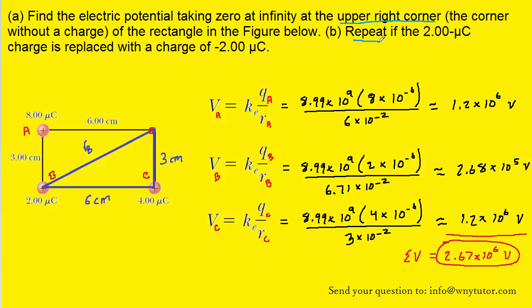For part B, we're going to repeat the procedure, except this time we are replacing the 2 microcoulomb charge, which was what we call charge B, with a charge of negative 2 microcoulombs. So really easy here. All we have to do is stick a negative sign in front of that charge. And when we go over to the calculation, we're just going to replace this positive 2 times 10 to the minus 6 with negative 2 times 10 to the minus 6.